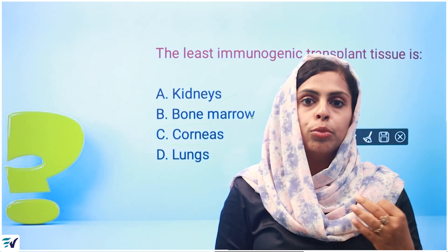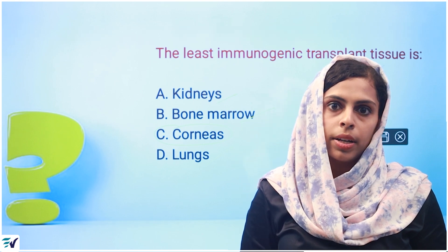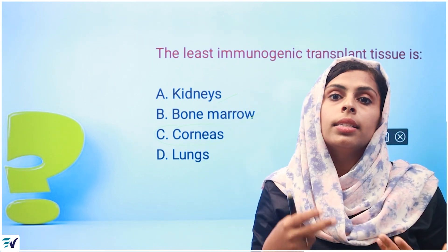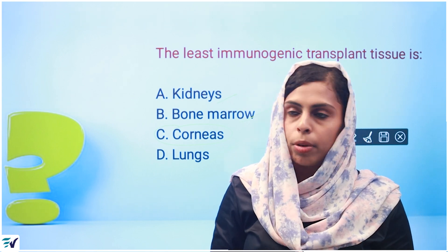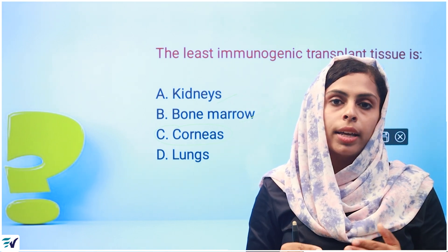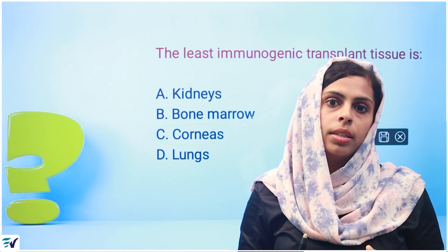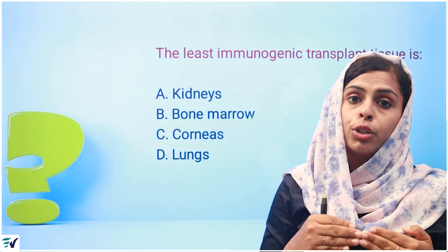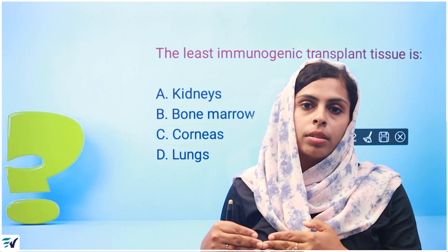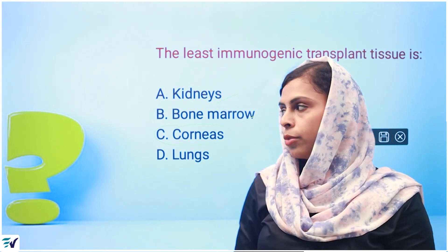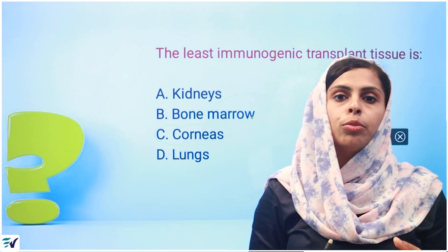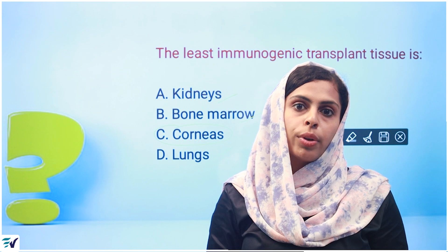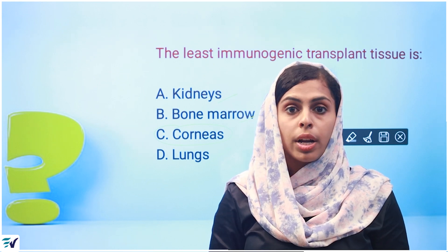In the cornea, there are three main reasons. First, avascularity — the cornea has blood vessels at low concentration. Second, class two MHC antigens are not present in the cornea. Third, absence of blood vessels, absence of class two antigens, and low concentration of class one antigens.